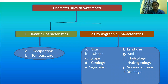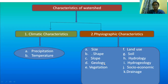There are two types of characteristics: one is climatic and the other is Physiographic Characteristics. Under Physiographic Characteristics, there are different types: Size, Shape, Slope, Geology, Vegetation, Land Use, Soil, Hydrology, Hydrogeology, Social Ecosystem, and Drainage. In the previous section, we have already discussed climatic characteristics, that is temperature and precipitation.